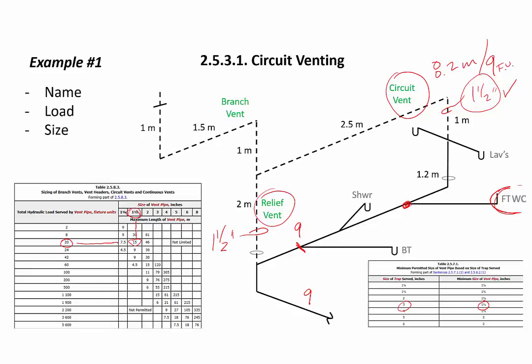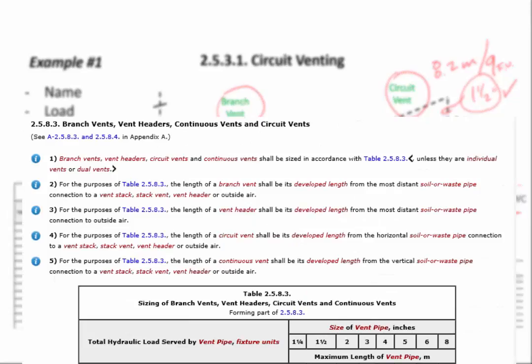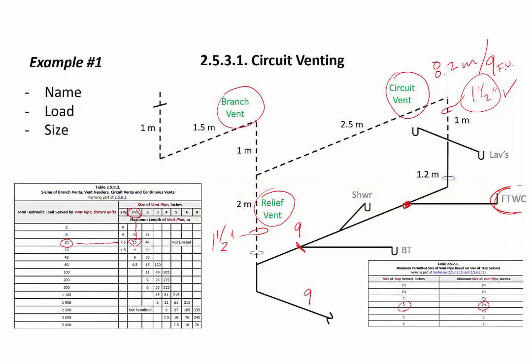Anytime water closets are involved, the minimum size of dry vents will be inch and a half as per table 2571. Anything acting as a wet vent serving water closets needs to be minimum two inch. Now let's size the branch vent as per article 2583. The lower end of a branch vent is its most distant drainage connection. Going back down into the system, every time I reach a tee I take the longest path back to a drainage pipe. For sizing the branch vent, the lower end is its connection to the symmetrical tee for the lavs.